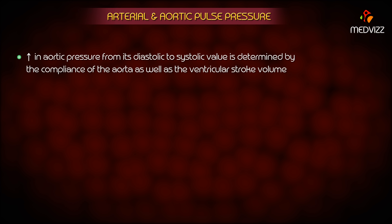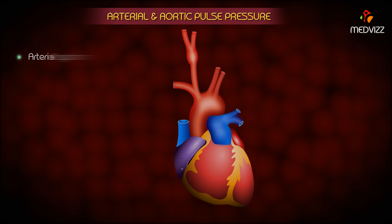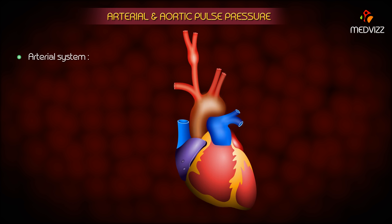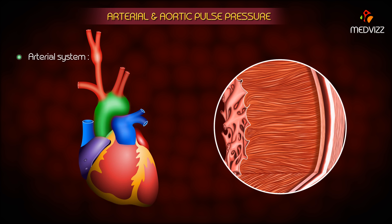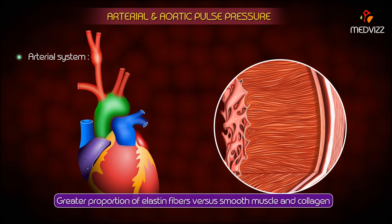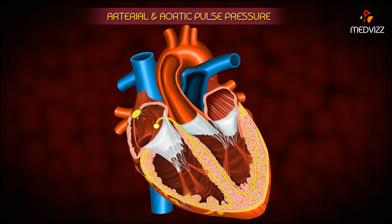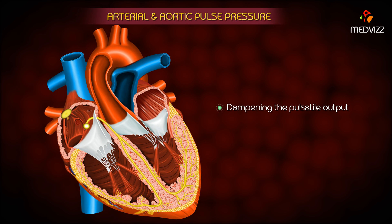The rise in aortic pressure from its diastolic to systolic value is determined by the compliance of the aorta as well as the ventricular stroke volume. In the arterial system, the aorta has the highest compliance, due in part to a relatively greater proportion of elastin fibers versus smooth muscle and collagen. This serves the important function of dampening the pulsatile output of the left ventricle, thereby reducing the pulse pressure.